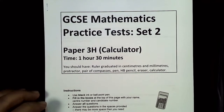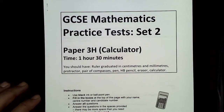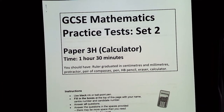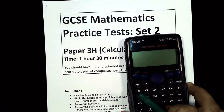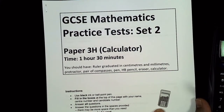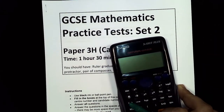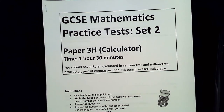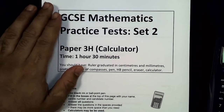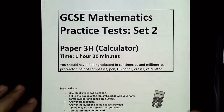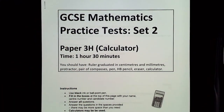Good morning or afternoon, wherever you are. I'm doing the video walkthrough for Set 2, Paper 3H — that's Paper 3 Higher, a calculator paper, as you can see from the calculator symbol. This video will be split into three sections with seven questions in each section. I'm going to first go through questions 1 to 7; you're welcome to skip to whichever question you want help with.